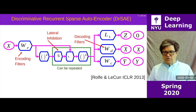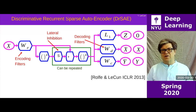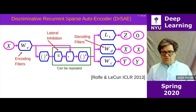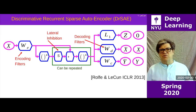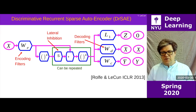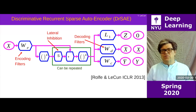You can see this in two ways: as an autoencoder that is biased towards producing good labels, or as a multi-layer classifier that is regularized by an autoencoder. The advantage is that by forcing the system to find representations that can reconstruct the input, you basically bias the system towards extracting features that contain as much information about the input as possible — making the features richer and preventing degenerate features.